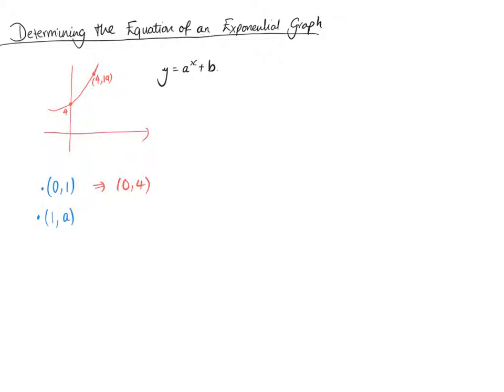So we know that it's been moved up 3, therefore b has to be 3, because we've moved it up those 3 points. Because it should be (0,1), it's not, it's (0,4). So everything has been moved up 3.